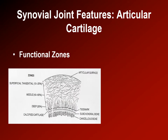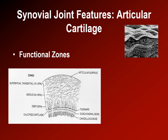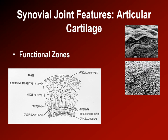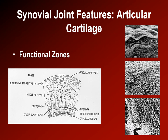This drawing demonstrates the direction of collagen fibers within articular cartilage depending upon their functional zone. The electron micrographs on the right show the different zones: collagen fibers oriented along the surface in the tangential zone, fibers running throughout in the middle zone, and deep zone fibers anchoring the cartilage to the bone.